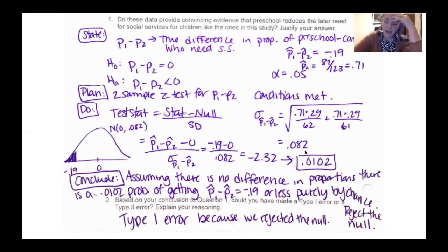The probability of that happening is 0.0102, shockingly small. 1% of the time, I'm going to get a number like negative 0.19. So it probably didn't just happen by chance. It probably really is that we can reject the null because it's less than 5%. We can reject the null and accept the alternate hypothesis.